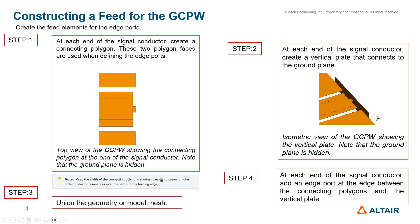This isometric view of the grounded coplanar waveguide shows the vertical plate, with the ground plane hidden for clarity. In step three, union all of these structures. Note: keep the width of the connecting polygons shorter than lambda/30 to prevent higher-order modes or resonances for the feeding edge. Finally, at each end of the signal conductor add an edge port at the edge between the connecting polygon and the vertical plate.